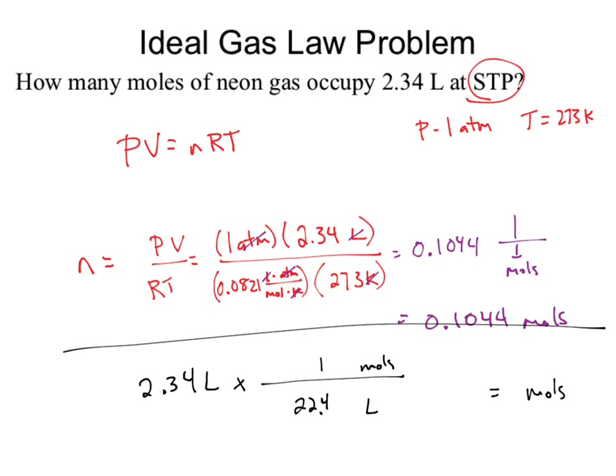22.4 liters per mole is true when at STP for a gas. What did I solve with? Ideal gas law: PV = nRT, so n = PV/RT. Pressure was one atmosphere, temperature is 273 K. One times 2.34 divided by 0.0821 times 273 — and guess what? It equals the exact same numerical result as using the 22.4 conversion. That conversion factor is an overly simplified version of PV = nRT.